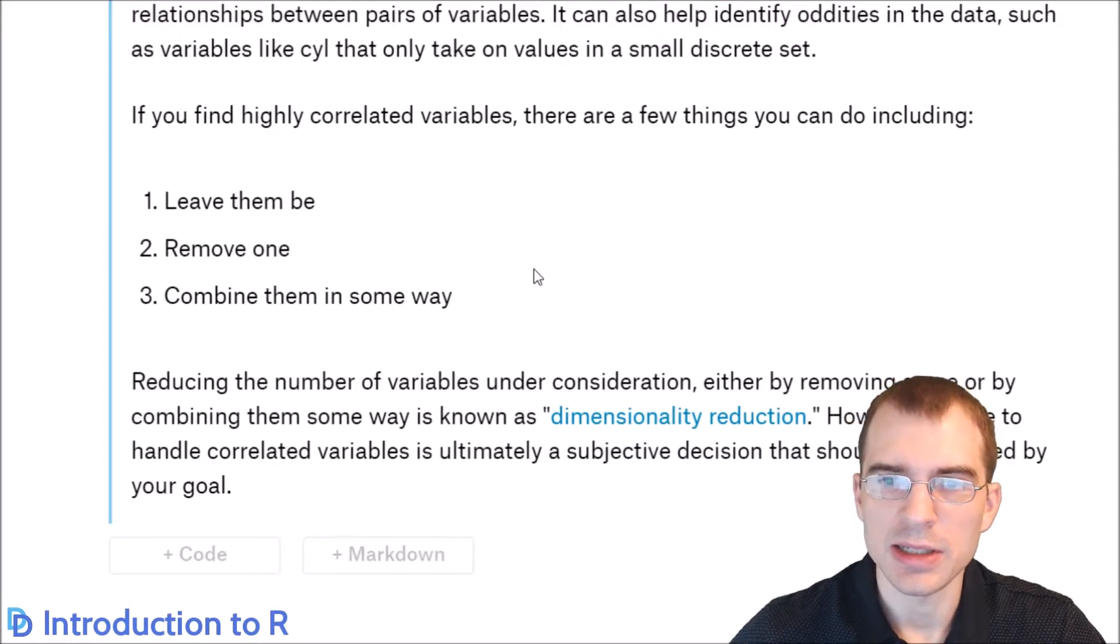Another thing to consider is combining them in some way. There are various dimensionality reduction techniques you can use that will reduce the total number of dimensions you're working with, which will end up combining highly correlated features oftentimes. We're not going to go in-depth about different techniques for doing that in this lesson, but know that that is something that you can do.